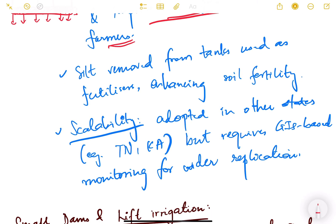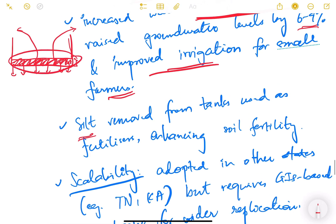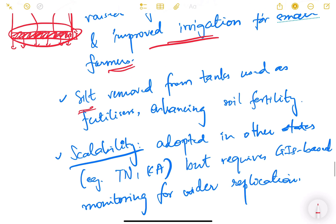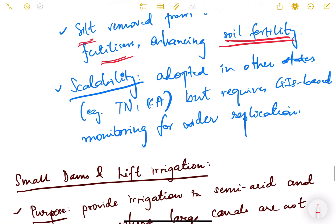These tanks are small—maybe individual tanks or community level—and they help small and marginal farmers. The silt removed can be used as fertilizers, enhancing soil fertility because they are good in nutrients.